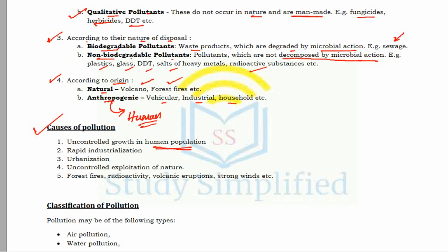The main cause of pollution is the uncontrolled growth of human population, which drives other causes such as rapid industrialization, urbanization, and uncontrolled exploitation of nature. Forest fires are also caused by humans. Natural causes of pollution include forest fires, radioactivity, volcanic eruptions, and strong winds. Pollution can be classified as air pollution, water pollution, noise pollution, soil pollution, and thermal or radiation pollution.